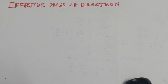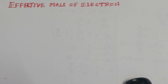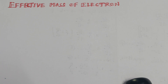The mass acquired by a free electron when it is accelerated in a periodic potential is called the effective mass of an electron. It is denoted by the term M star.